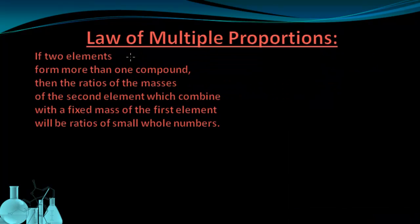We're going to go through this line by line. If two elements, let's say A and element B, form more than one compound, so that could be AB or AB2 or AB4 as some examples.